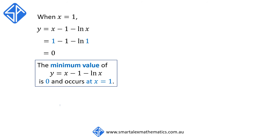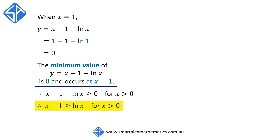This means that x minus 1 minus log of x is greater than or equal to 0 for x is greater than 0, and therefore x minus 1 is greater than or equal to log of x for x is greater than 0. Our statement is proven.